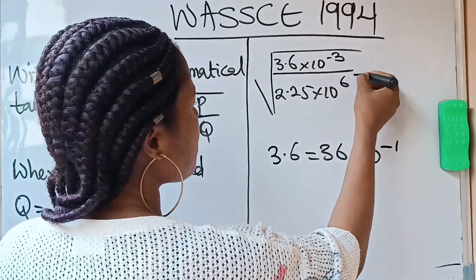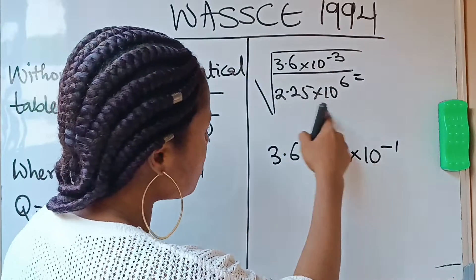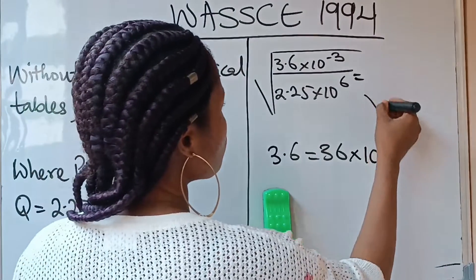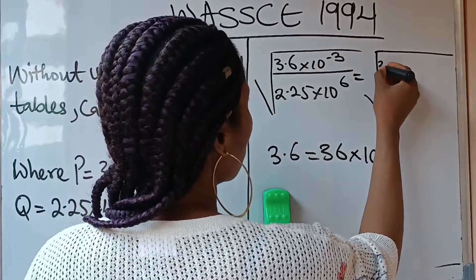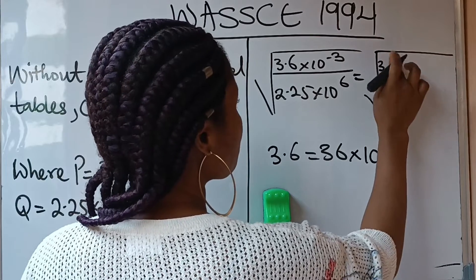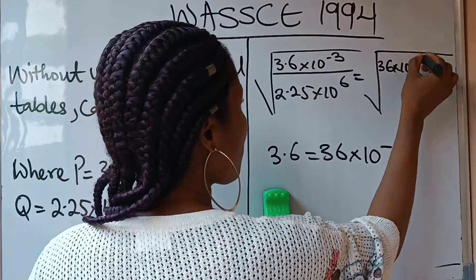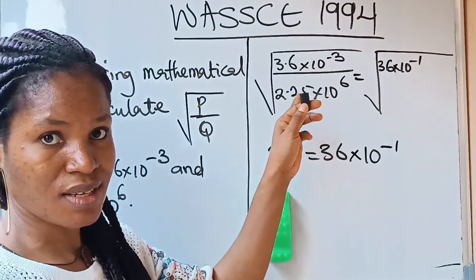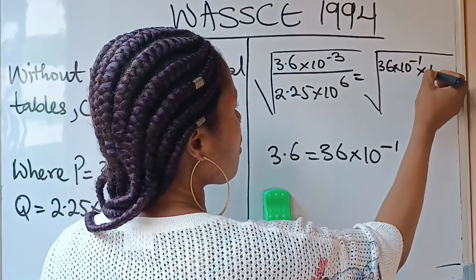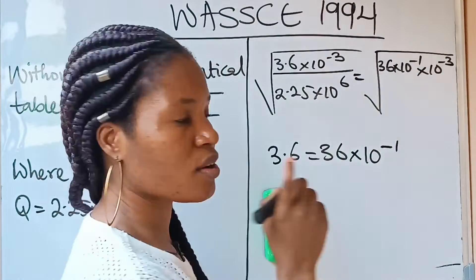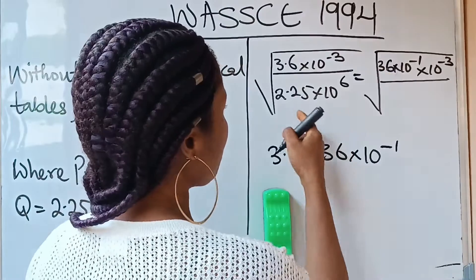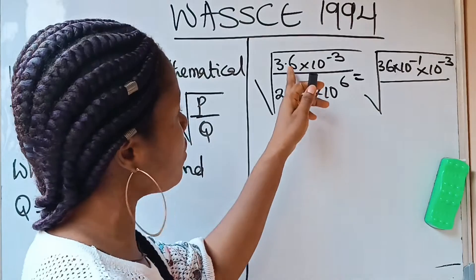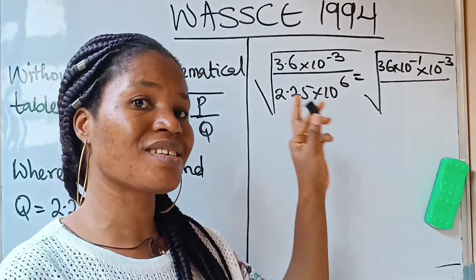So this is equal to 36 times 10 raised to the power of minus 1, to replace 3.6, times 10 raised to the power of minus 3. Now for this 2.25 — just pay close attention in case you did not understand what I did in the first one.